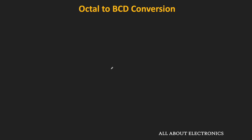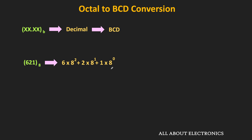Now let's see the octal to BCD conversion. For this, the procedure will remain the same — first we will find the decimal equivalent of the given octal number, and then perform the decimal to BCD conversion. Let's say we want to find the BCD equivalent code of this octal number 621. Let's find the decimal equivalent by multiplying each octal digit with their corresponding weight. The weight of digit 1 is 8 to the power 0, equal to 1; the weight of digit 2 is 8; and the weight of digit 6 is 64. Summing all these weights, the equivalent decimal number is 401.